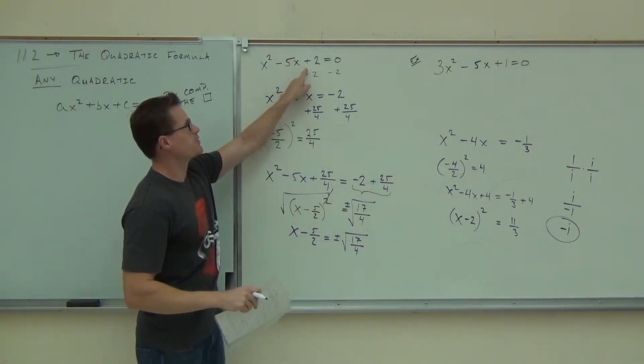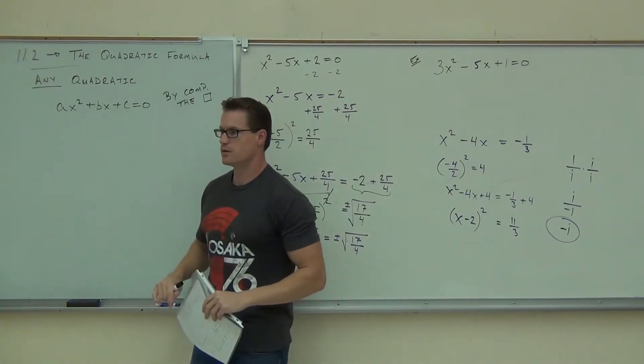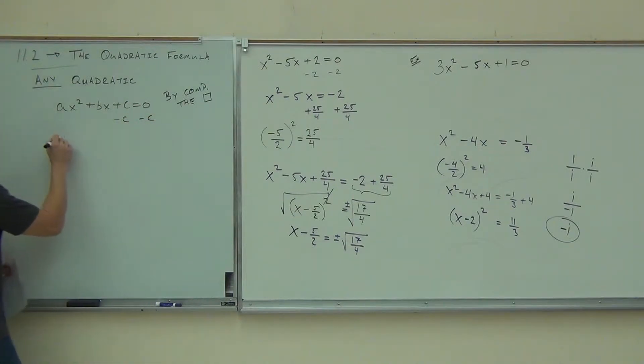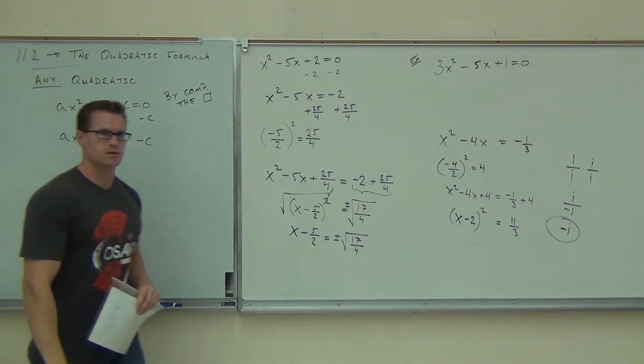The steps to completing the square said, first off, you need to get your constant term off to the other side. What's my constant term here? c. I'm going to subtract c. So I get ax squared plus bx equals negative c.